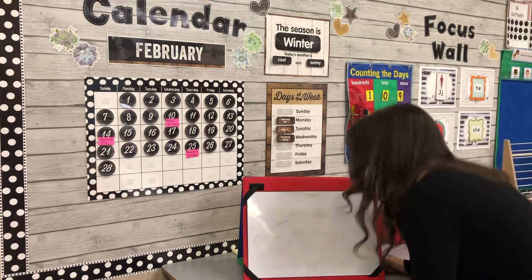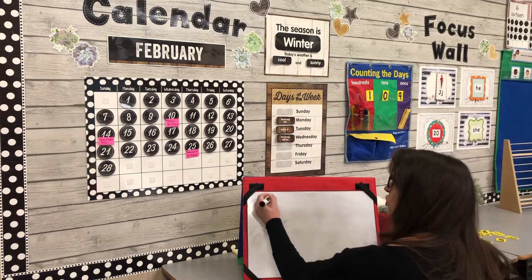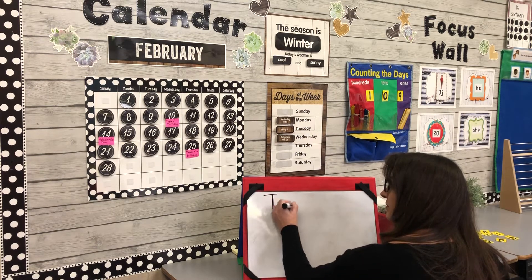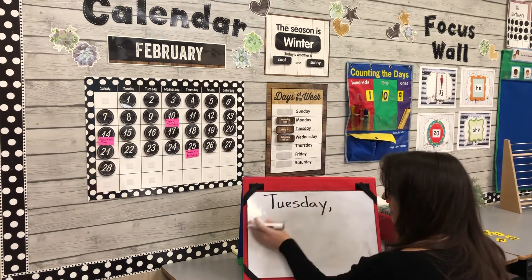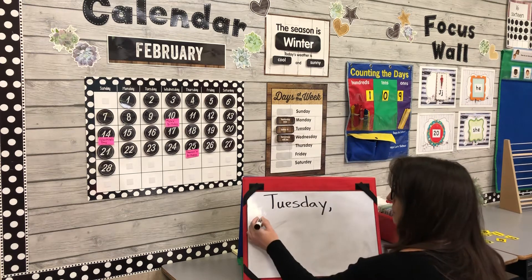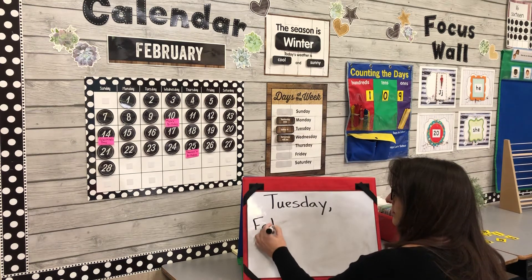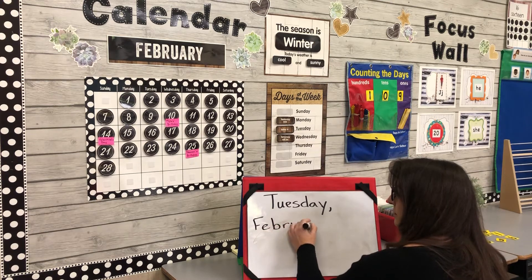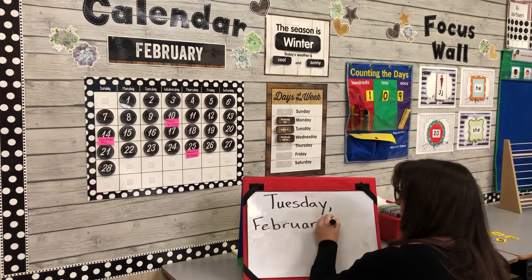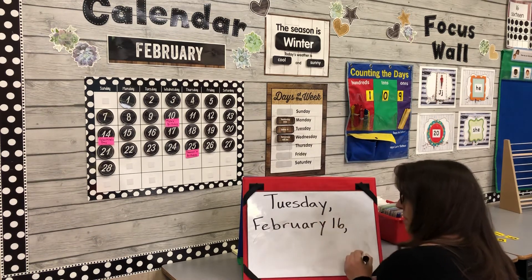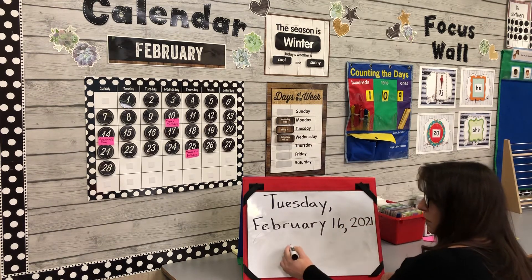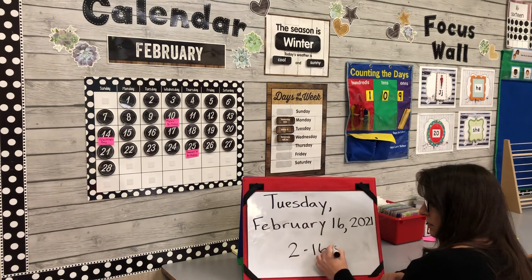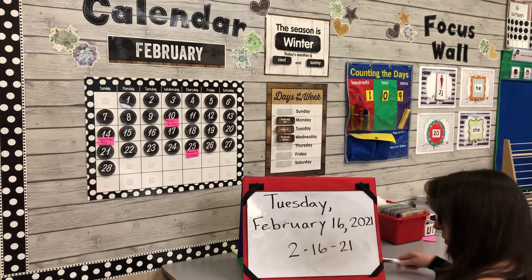I'm going to write the whole date down. It is Tuesday — and we make a comma because we separate the day of the week from the month — February 16th. A comma separates the year and the date: 2021. February is the second month, it's the 16th day in that month, and the last two digits of the year are just 21.